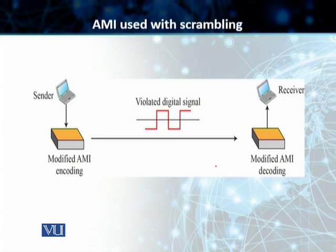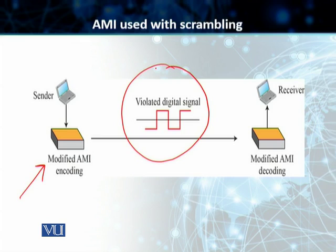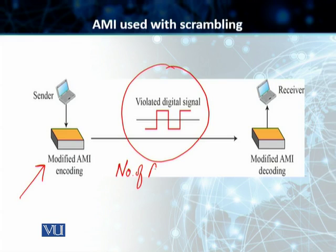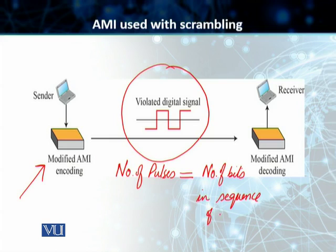Students, the signal is scrambled and encoded at the sending end. The violated digital signal — that is, the encoded and scrambled digital signal — then goes to the decoder, at which point it is decoded and the output is given to the receiver. We have two different scrambling techniques that we will discuss later, but the key point is that in the scrambling process, the number of extra pulses included will be equal to the number of bits in the sequence that we are trying to replace, which in this case is the sequence of zeros.